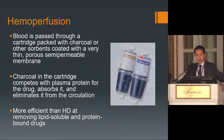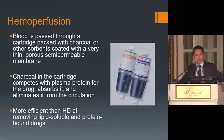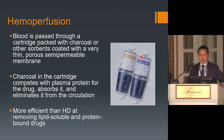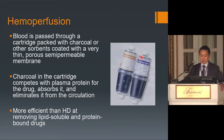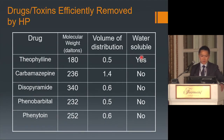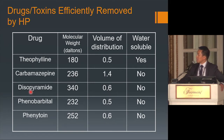Hemoperfusion uses a hemodialysis machine but with cartridges packed with charcoal or another absorbent surrounded by a thin, porous, semi-permeable membrane. The charcoal competes with plasma proteins for the drug, absorbing it and eliminating it from circulation. The advantage is that hemoperfusion may be more efficient than hemodialysis at removing lipid-soluble or protein-bound drugs. Drugs for which it may be effective include theophylline, carbamazepine, disopyramide, phenobarbital, and phenytoin — generally larger, less water-soluble substances.